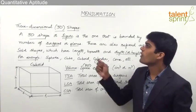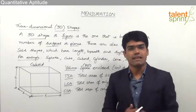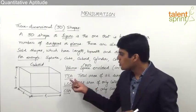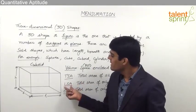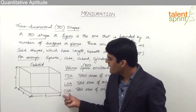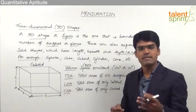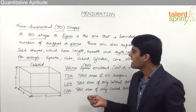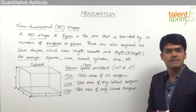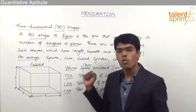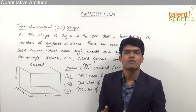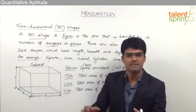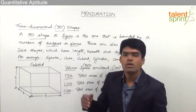The other parameter that we measure for a 3D shape is the surface area. Surface area can be of different types: total surface area (TSA), lateral surface area (LSA), and curved surface area (CSA). Total surface area is the total area of all the surfaces. For example, in a cuboid we have 6 surfaces, so when we add up all the areas of these 6 surfaces, we get the total surface area of the cuboid.